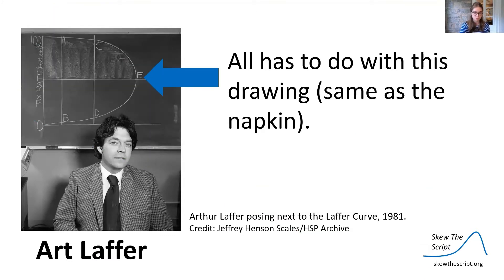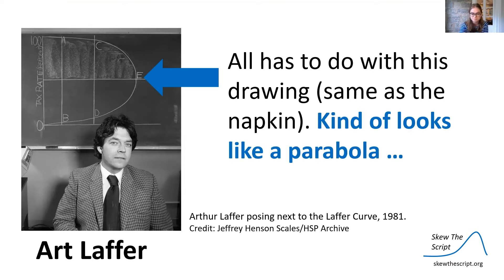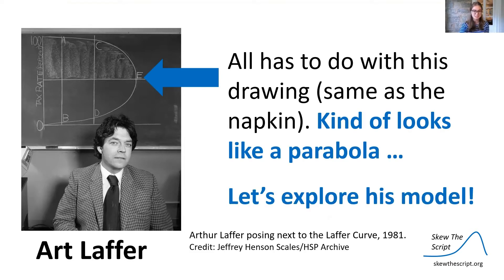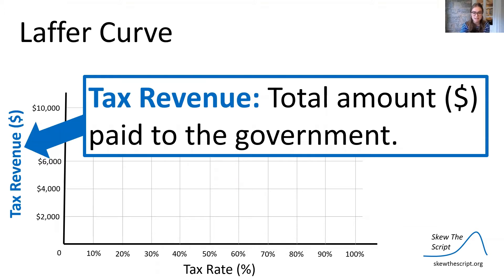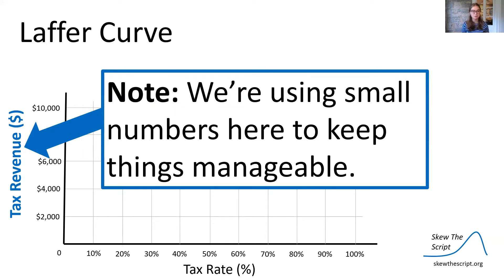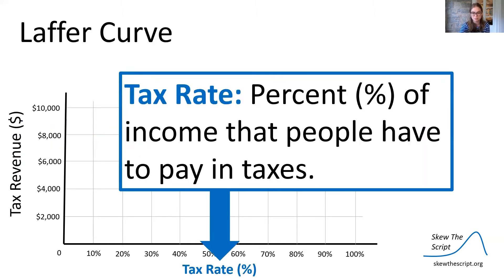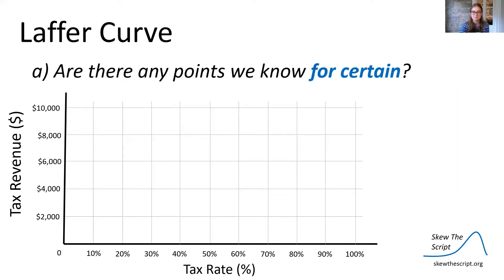It all has to do with this drawing, which is the same drawing as what he wrote on the napkin, and it kind of looks like a parabola. Let's explore his model. We're going to draw the Laffer curve on this graph. Our y-axis is our tax revenue — the total amount of money paid to the government. It's important to note that we're using small numbers; we can see that the maximum tax revenue is $10,000. Our x-axis is our tax rate — the percent of income that people have to pay in taxes. Now, are there any points that we know for certain?